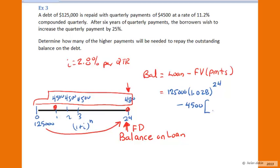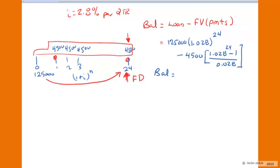This is an annuity, so I'm going to multiply that by the future value annuity factor: (1.028^24 - 1) divided by 0.028. This gives me two amounts that will help determine the balance. When you work this out on your calculators, $125,000 compounded for 24 quarterly periods gives you $242,242.44 — store this number in memory 1.